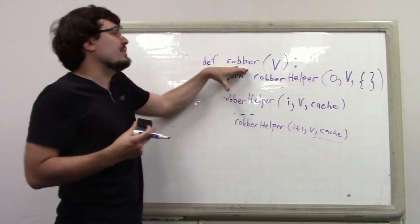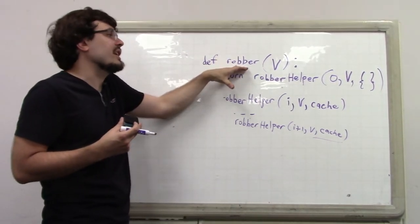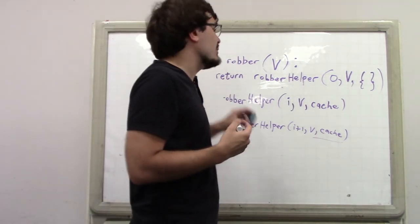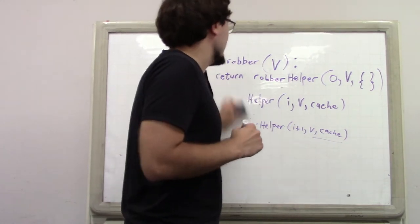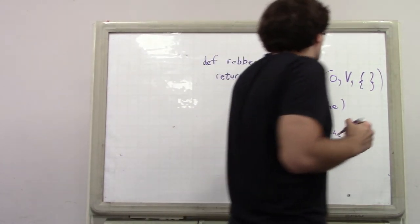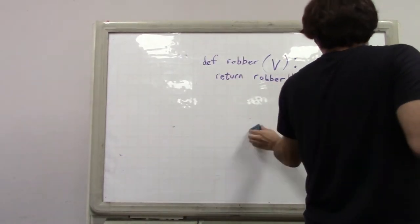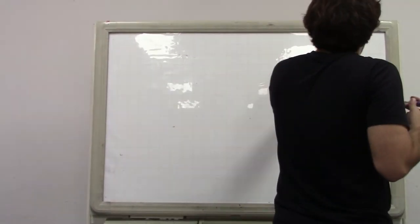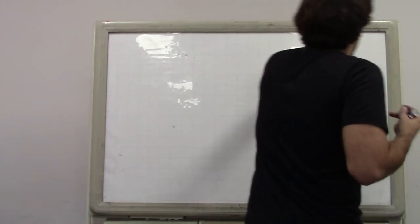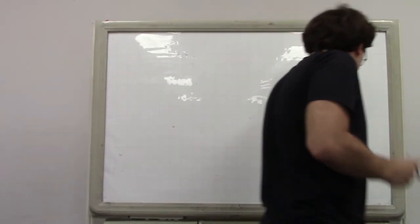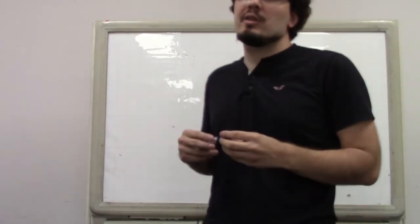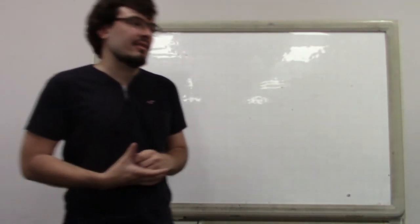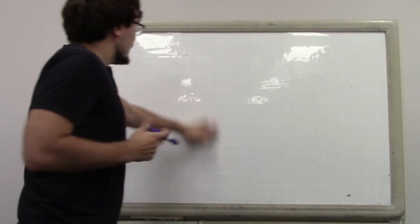In Python you can nest functions inside other functions, and those functions automatically capture outer parameters, which can simplify this. But in a language-agnostic way, the most general approach is to create an outer helper function whose only purpose is to call the recursive function and supply any cache it needs.